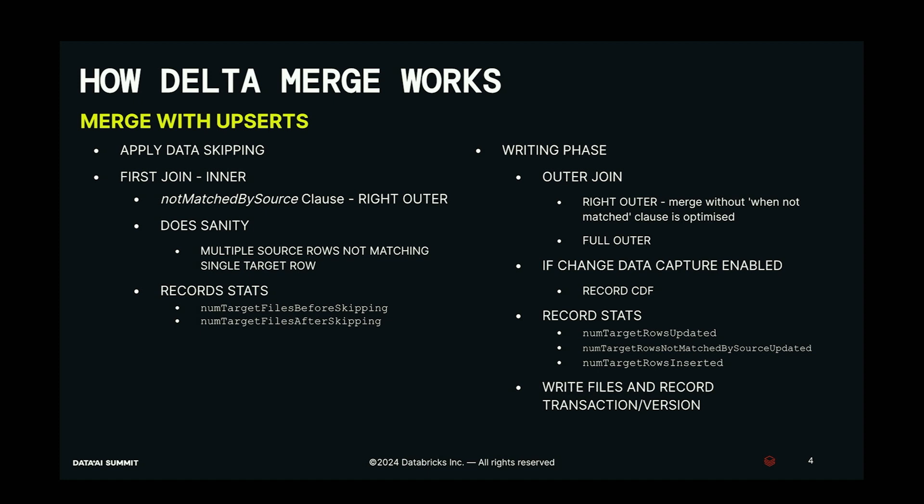At a high level, focus on three parts: data skipping, the inner join part, and the writing phase where you have the outer join. We'll talk step by step about this, and I'll keep coming back to this slide as a reference. So first, let's talk about the data skipping part.